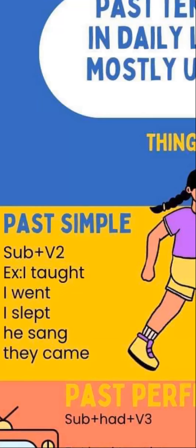Here are some examples of past simple: I taught. I went to university. I slept last night. He sang a song. They came to our house. Past simple can be used for any completed action in the past.